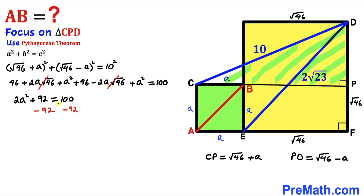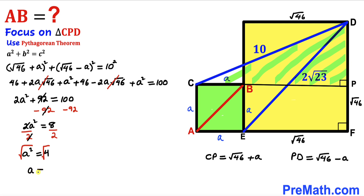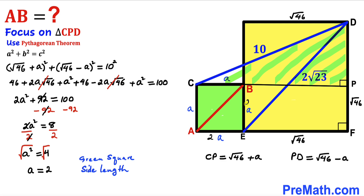Combining like terms: 46 + 46 + 2a² = 100, which gives 92 + 2a² = 100. Subtracting 92 from both sides: 2a² = 8. Dividing both sides by 2: a² = 4. Taking the square root: a = 2 units. Since a represents the side length of the green square, all four sides of the green square are 2 units.